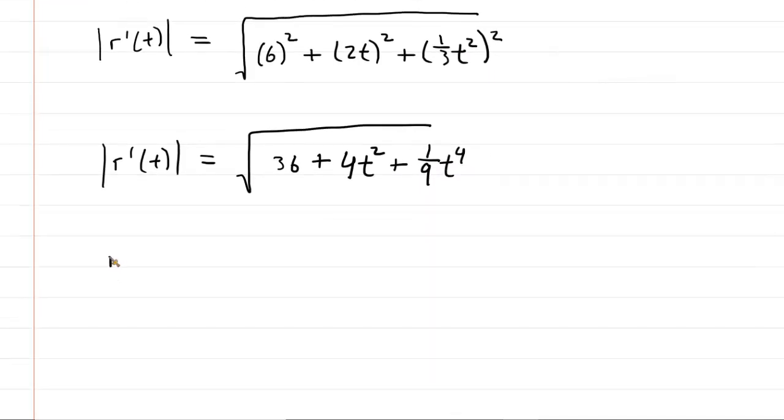We may actually wish to rewrite this in a standard form. So we'll write it in descending powers of t. So, in other words, we'll put the 1/9 t to the 4th first, followed by the 4t squared, and then followed by the constant of 36. So, this is the magnitude of the derivative of our vector function.